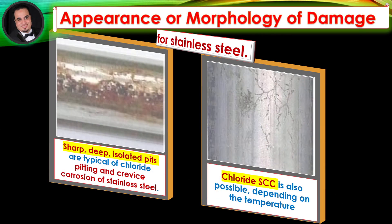For stainless steel: sharp, deep, isolated pits are typical of chloride pitting and crevice corrosion. Chloride stress corrosion cracking is also possible depending on the temperature.